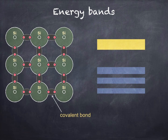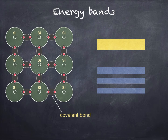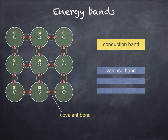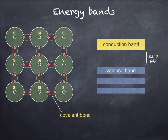The diagram on the left shows what's known as the semiconductor bonding model. At zero Kelvin, all of the outer electrons are bonded. The diagram on the right shows the energy band model. In order to explain the electrical properties of semiconductors, we only need to consider two energy bands: the valence band and the conduction band. These are separated by a band gap, which we'll discuss later. This is an undoped semiconductor of pure silicon — what we call an intrinsic semiconductor. At zero Kelvin, all the outer electrons are bonded.